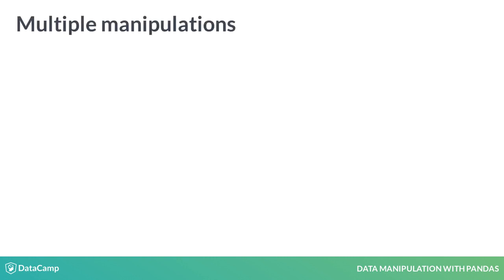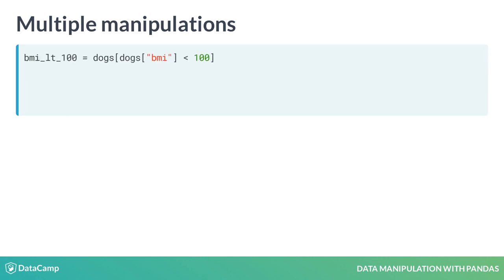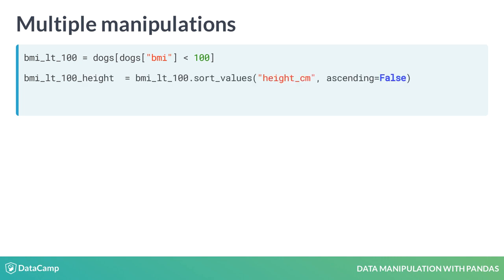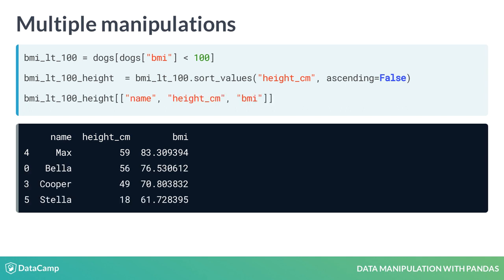The real power of pandas comes in when you combine all the skills you've learned so far. Let's figure out the names of skinny, tall dogs. First, to define the skinny dogs, we take the subset of dogs who have a BMI of under 100. Next, we sort the result in descending order of height to get the tallest skinny dogs at the top. Finally, we keep only the columns we're interested in. Here you can see that Max is the tallest dog with a BMI of under 100.